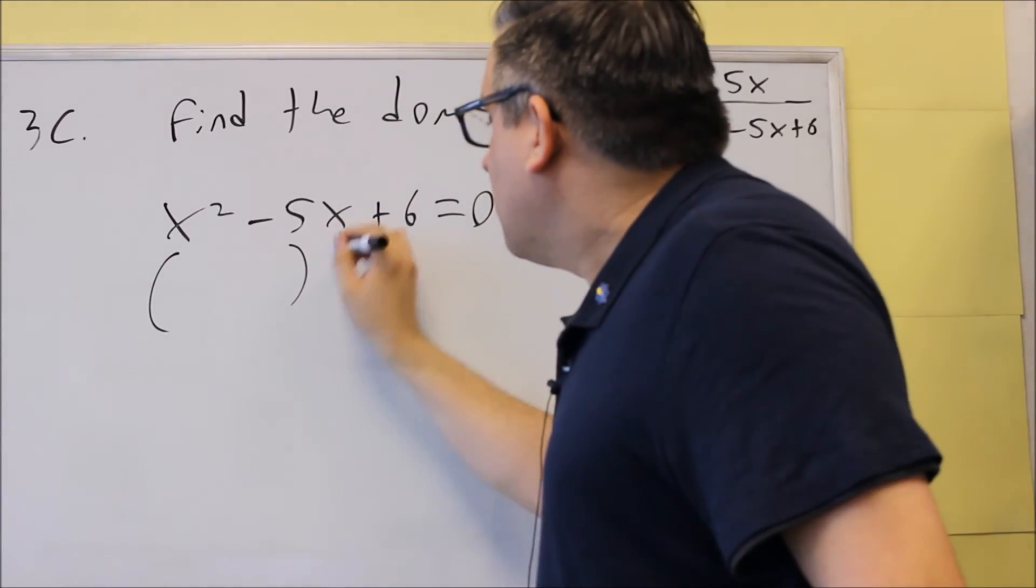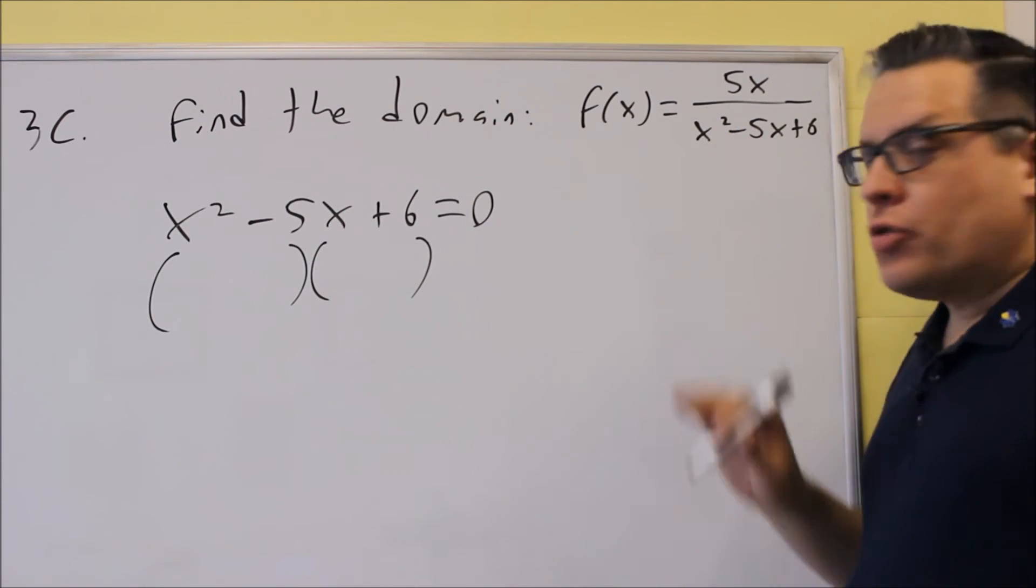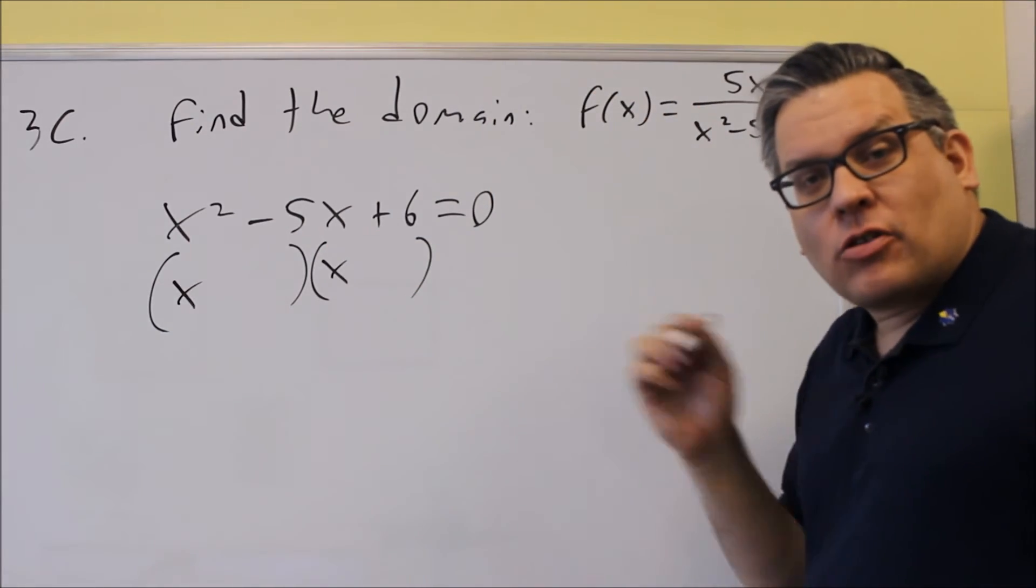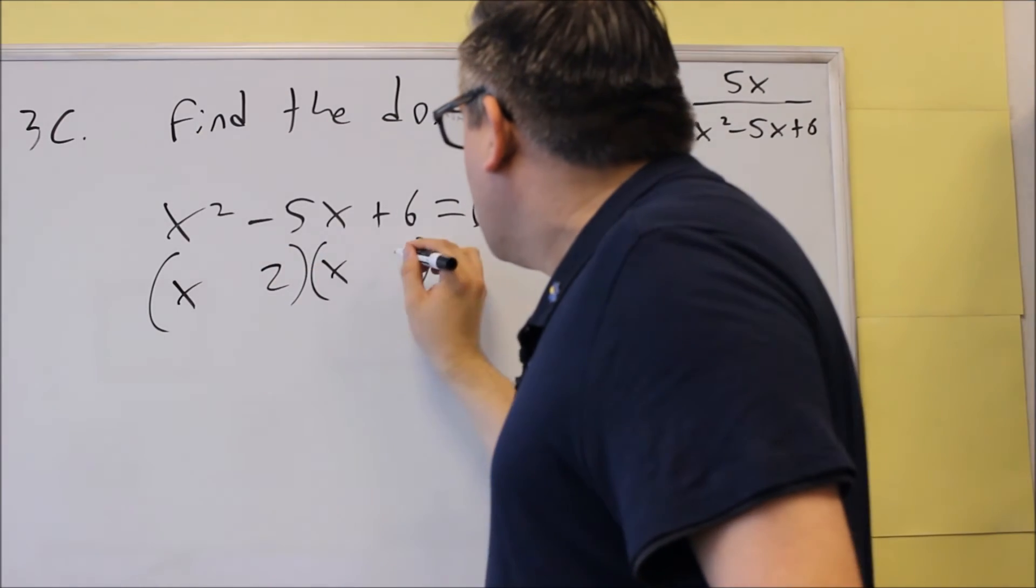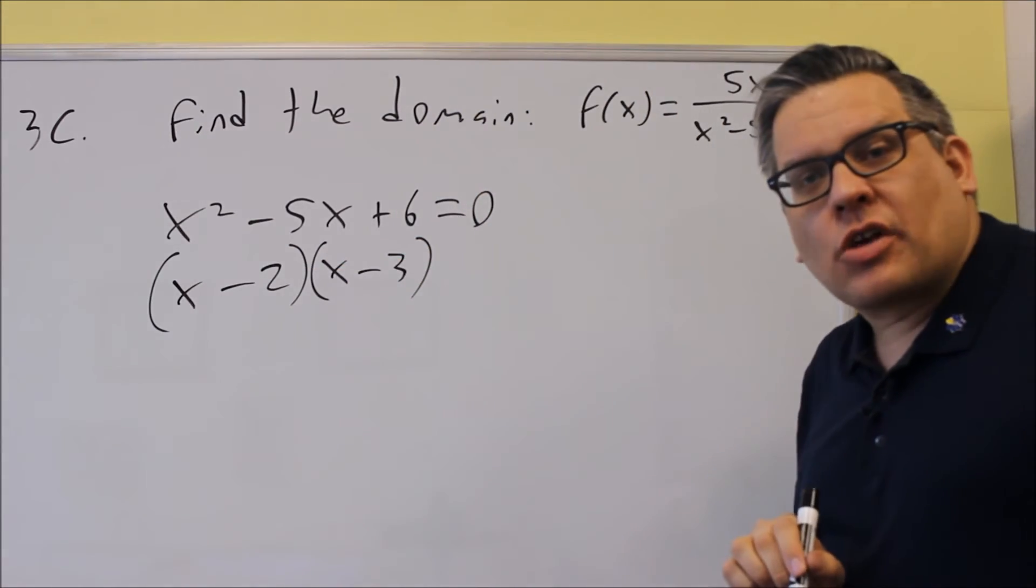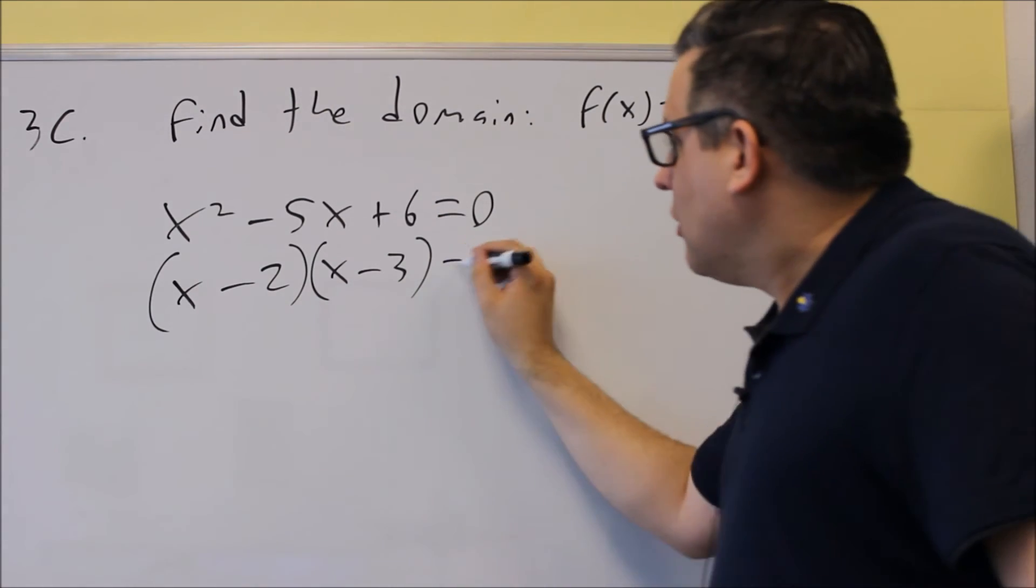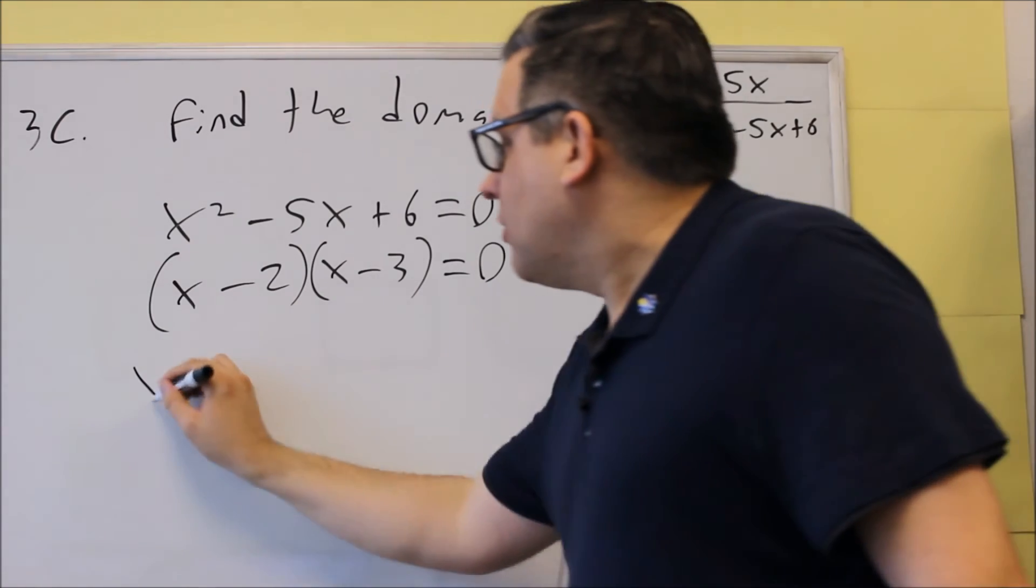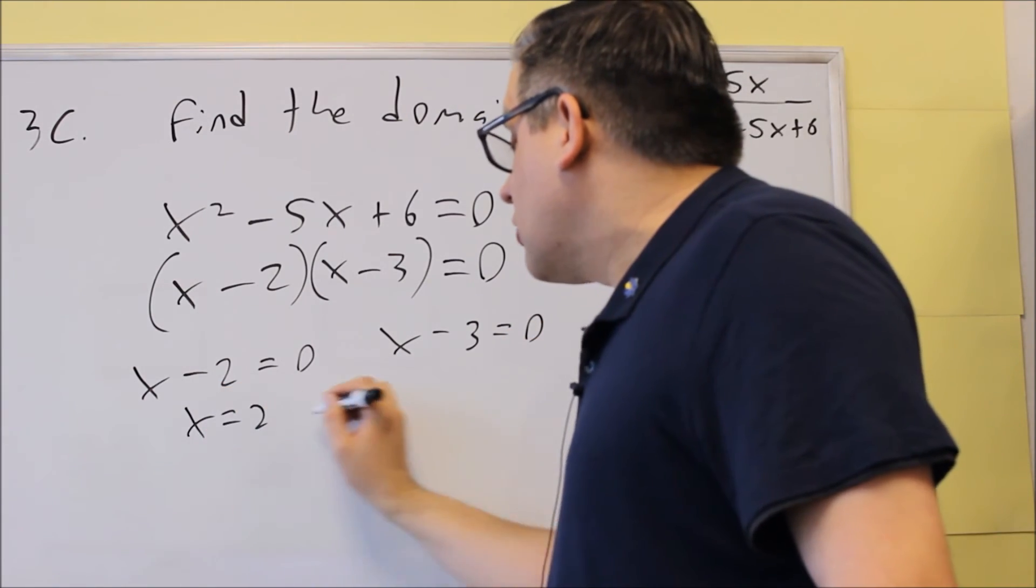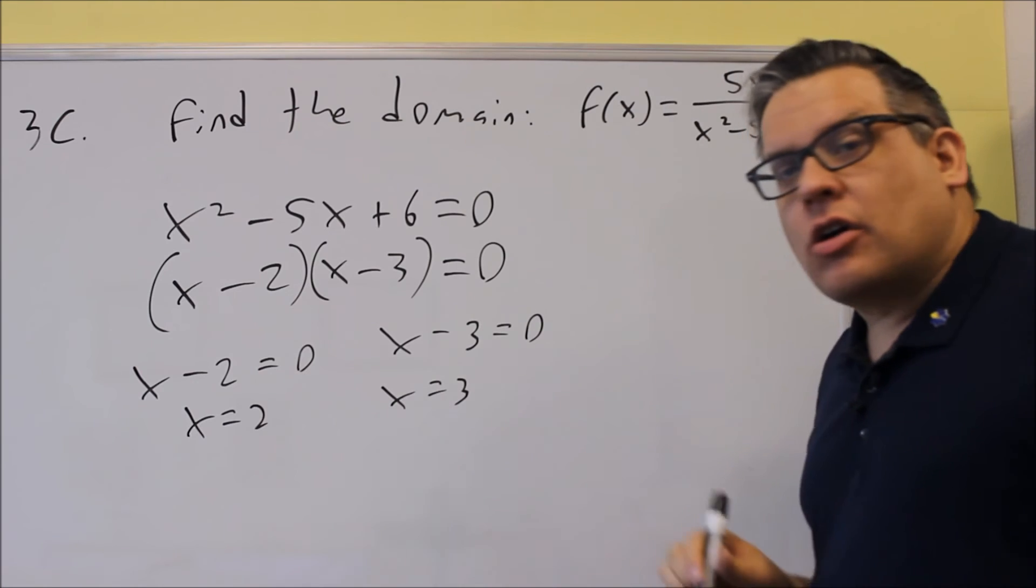And we're going to set that one equal to 0. We're going to factor it. And then we'll find the values for x that will not be allowed to put in here for domain. So we're going to look for factors of 6 that add up to negative 5. We're going to use 2 and 3 in this case to make both of them negative. We can't use 6 and 1 because the last number is positive, which means that both these signs would have to be negative. We're going to set each individual one equal to 0. And that's going to give us 2 and 3. So 2 and 3 are our answers. These are the ones that are not allowed.